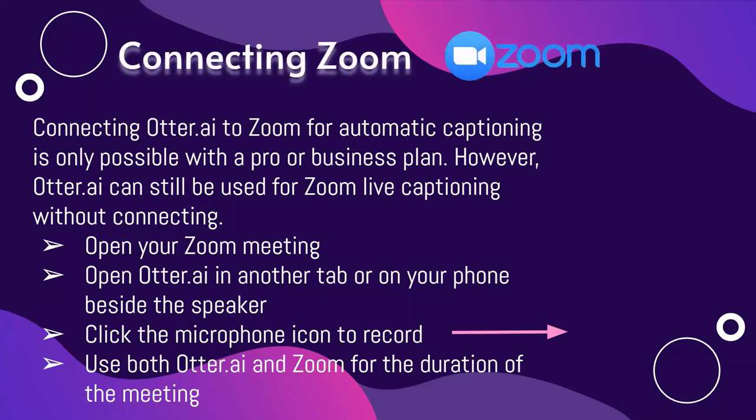Connecting to Otter AI for Zoom with automatic captioning is only possible with a pro or business plan. However, Otter AI can still be used for Zoom live captioning without connecting. First, you can open your Zoom meeting, open the Otter AI app in another tab on your phone beside the speaker, and click the microphone icon to record. That way, you can override the need for having to pay for a pro or business plan by just having your phone listen in.